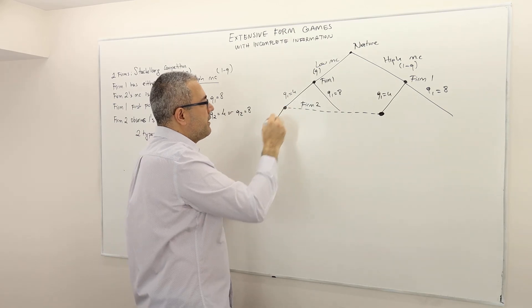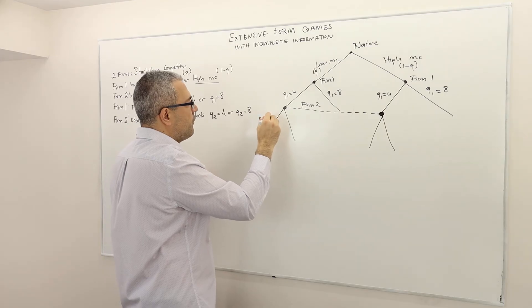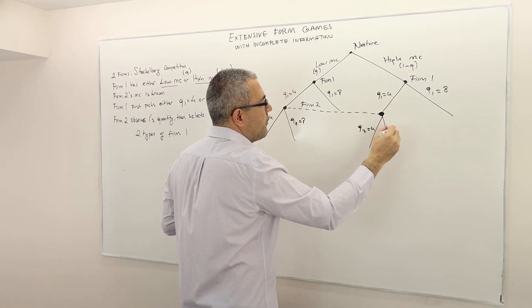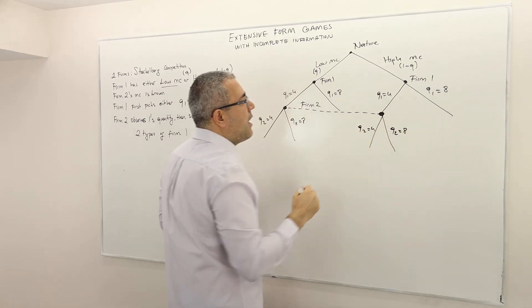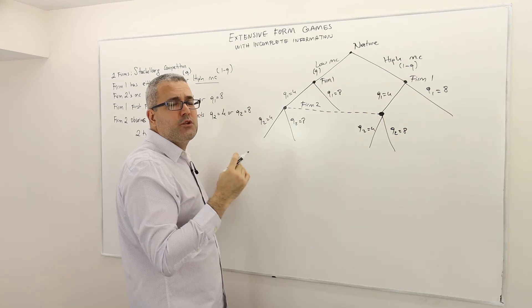So here I have firm 2's choices. It's q2 equals 4, q2 equals 8, and q2 equals 4, q2 equals 8.